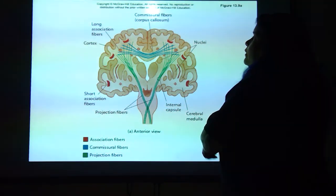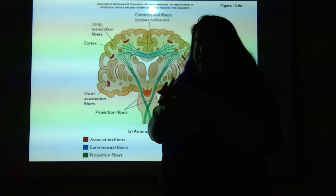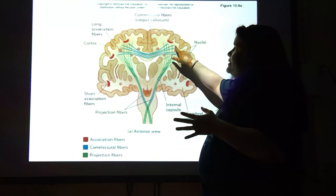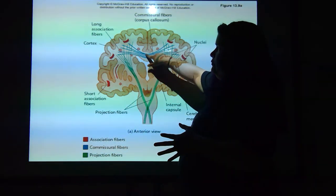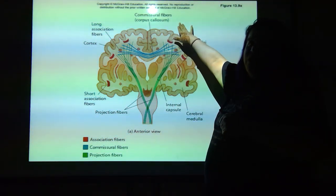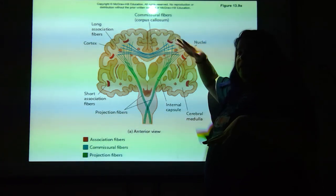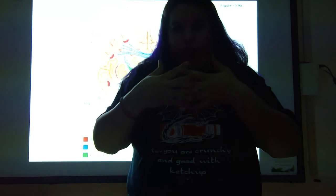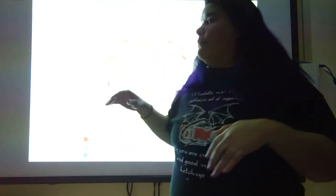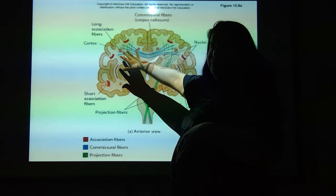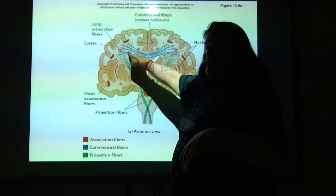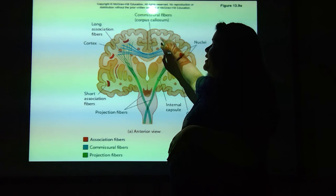With white matter being highways for communication — see the blue here? These are commissural fibers. Remember in the spinal cord lecture, the gray commissure attached the two wings to each other. In this case, commissural fibers are attaching the two hemispheres — left and right — of the cerebrum to each other. If I need information to get from one side to the other, this is the highway: the commissural fibers.